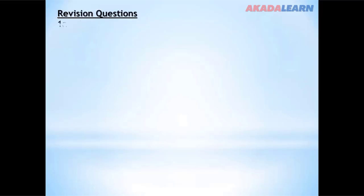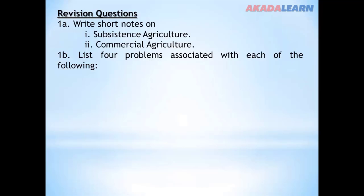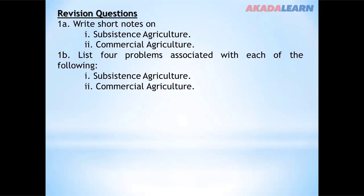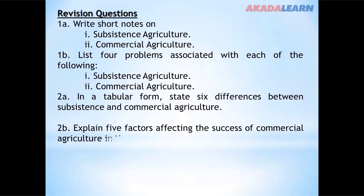Revision questions: Number one (a), write short notes on subsistence agriculture and commercial agriculture. Number one (b), list four problems associated with each. Number two (a), in tabular form, state six differences between subsistence and commercial agriculture. Number two (b), explain five factors affecting the success of commercial agriculture in Nigeria.